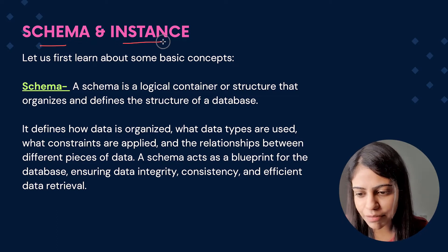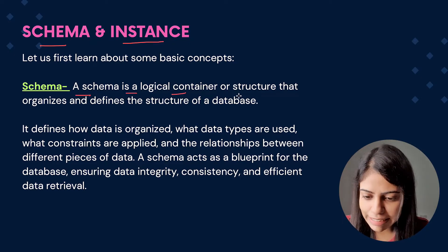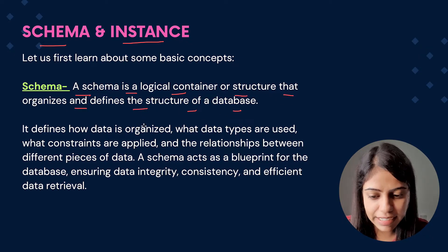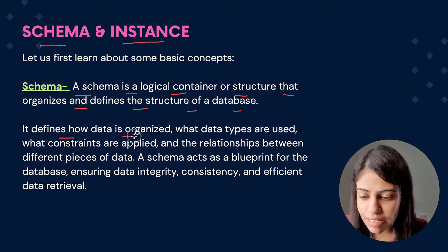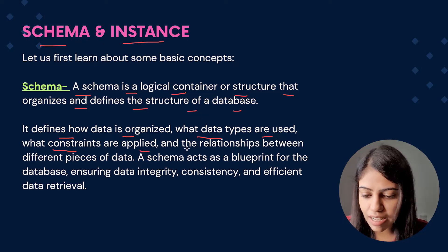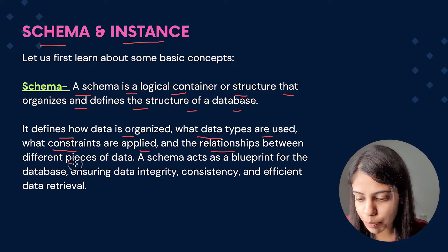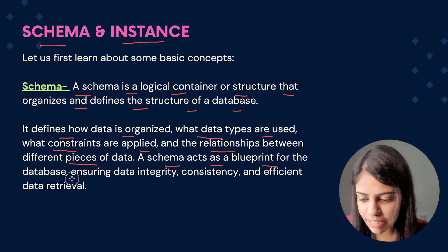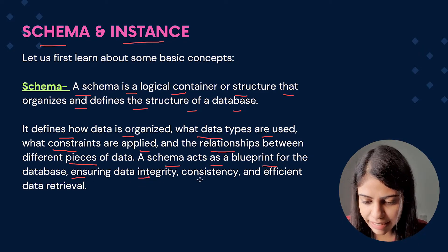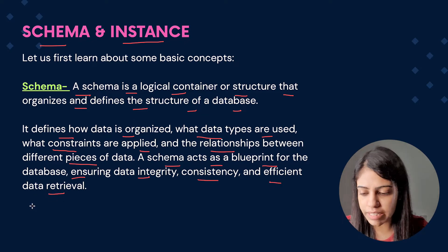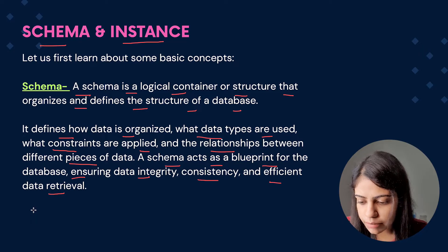So firstly we will start with schema, and then we will see what is instance. A schema is a logical container or a structure that organizes and defines the structure of a database. It identifies how data is organized, what data types are being used, what constraints are applied, and the relationships between different pieces of data. A schema acts as a blueprint for the database, ensuring data integrity, consistency, and efficient data retrieval.